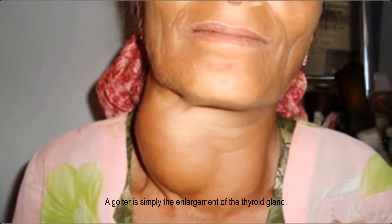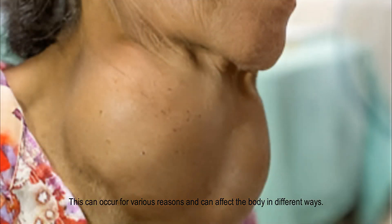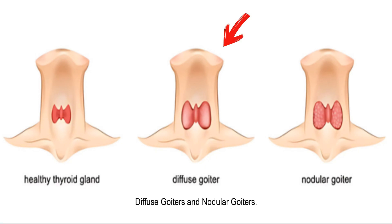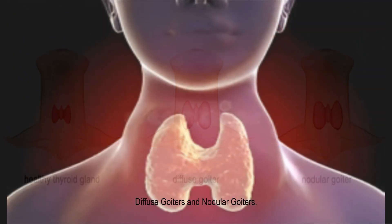A goiter is simply the enlargement of the thyroid gland. This can occur for various reasons and can affect the body in different ways. To make things easier to understand, we classify goiters into two major groups: diffuse goiters and nodular goiters.